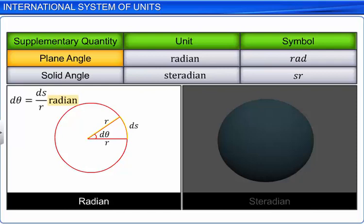It is defined as the angle subtended at the center of a circle by an arc of length equal to the radius of the circle.